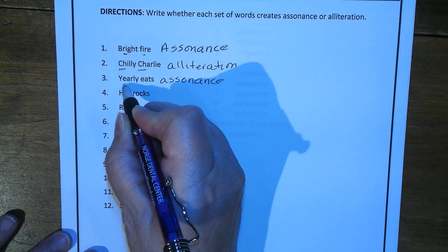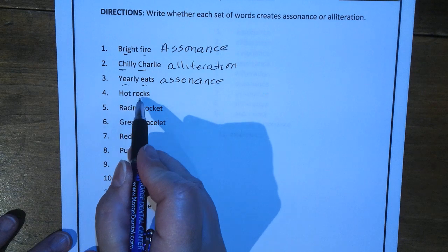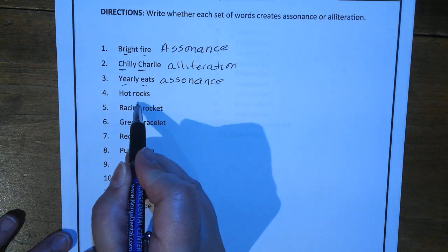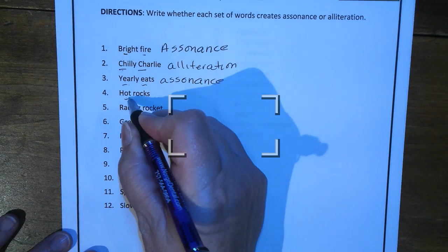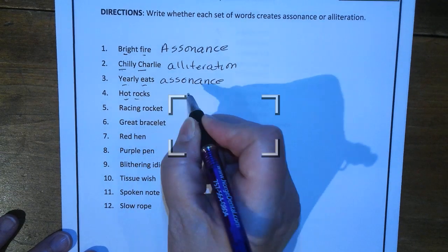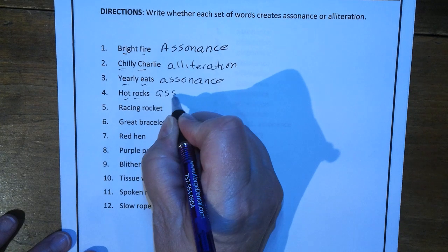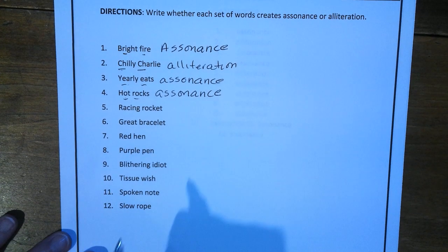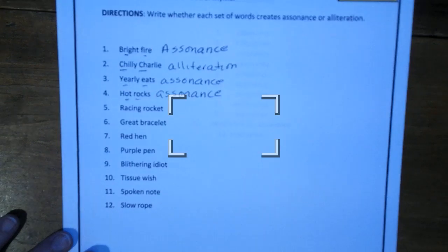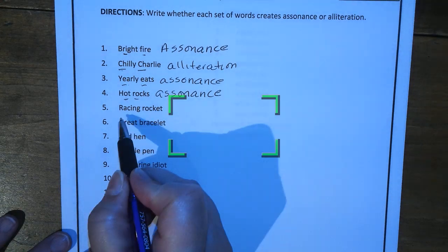Hot rocks — the O sound, here and here, so that is assonance. Racing rocket — the R being repeated, so that's alliteration.